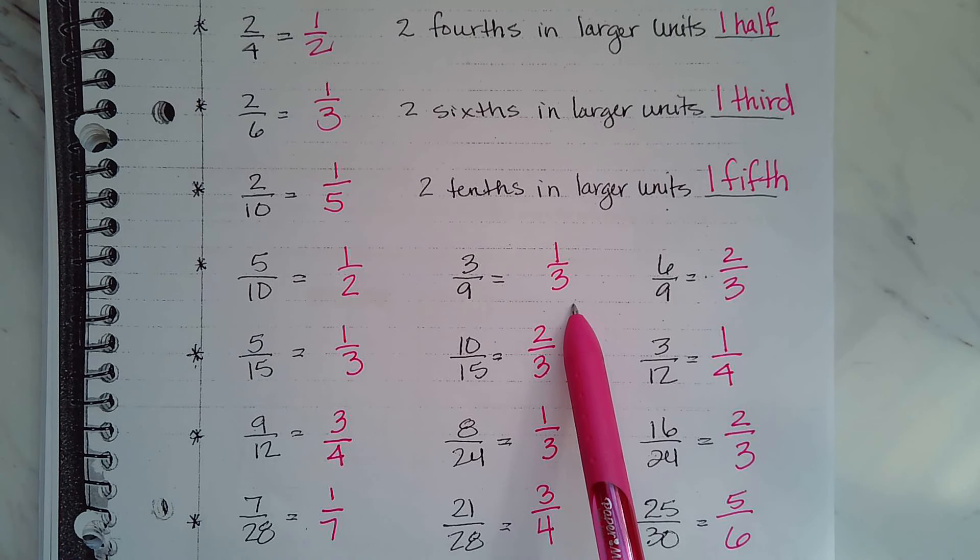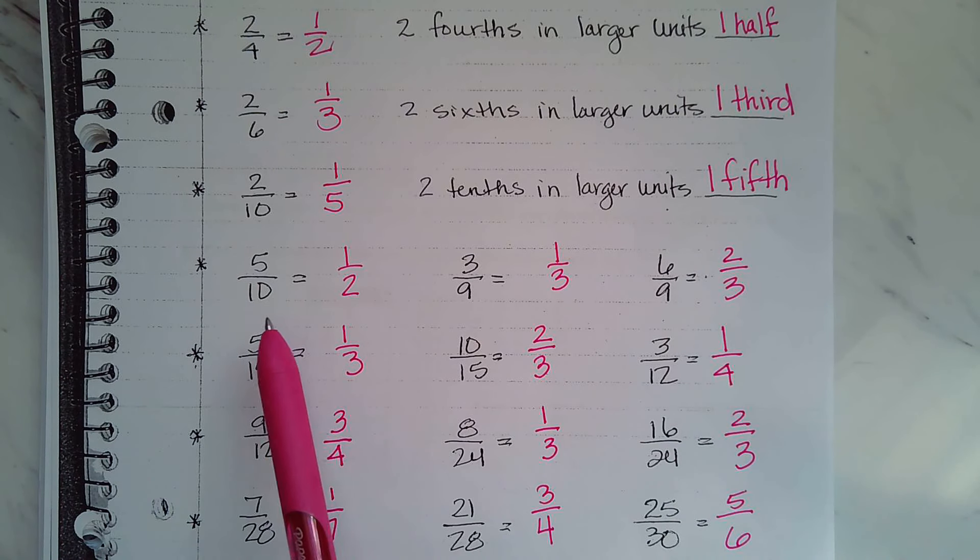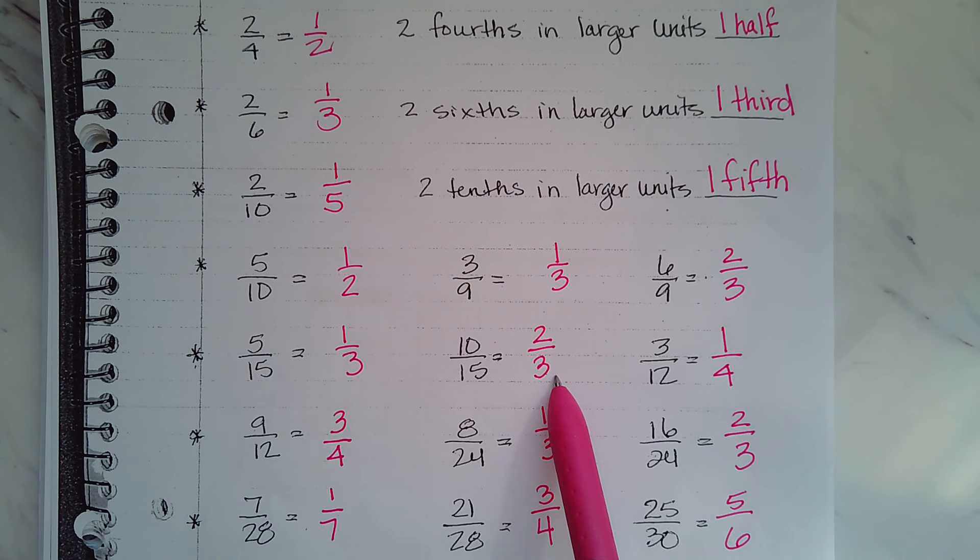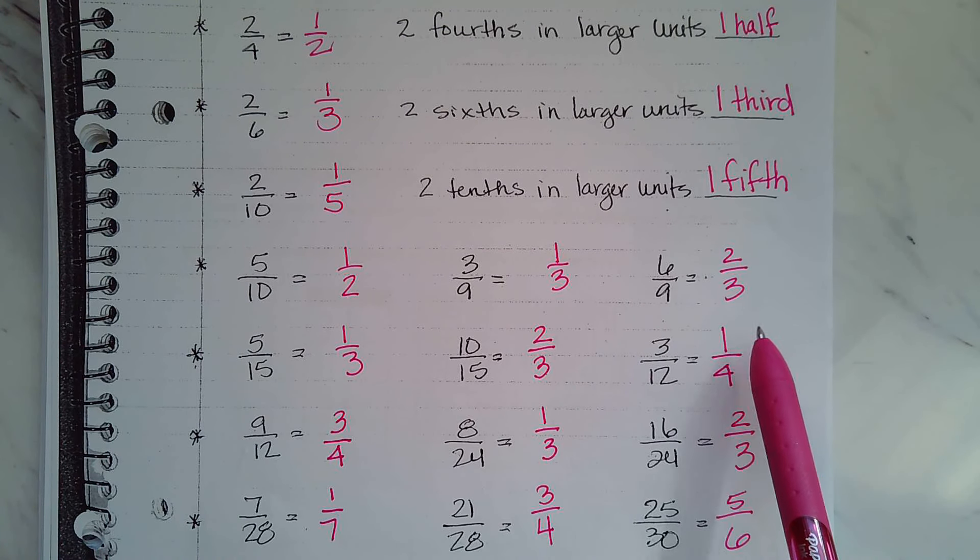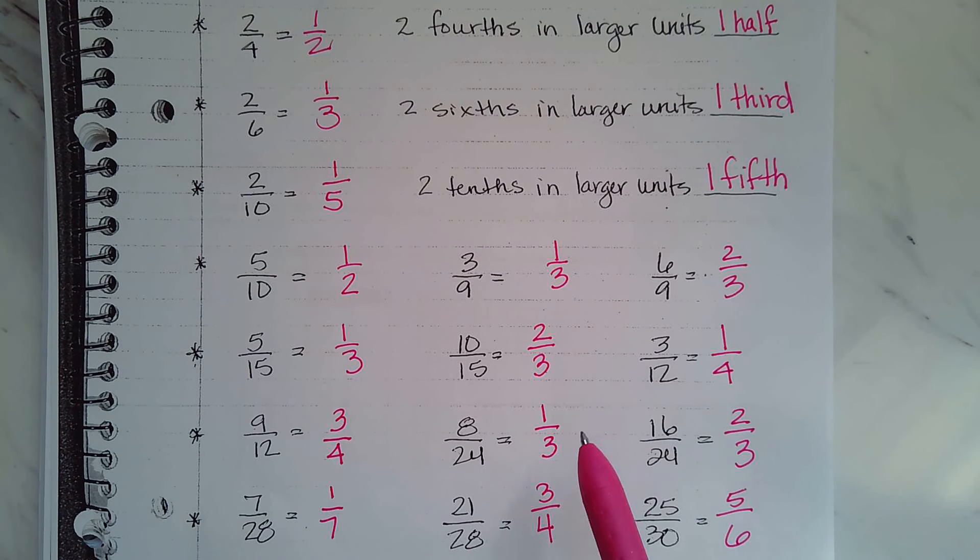Five-tenths is a half, three-ninths is one-third, six-ninths is two-thirds, five-fifteenths is one-third, ten-fifteenths is two-thirds, three-twelfths is one-fourth.